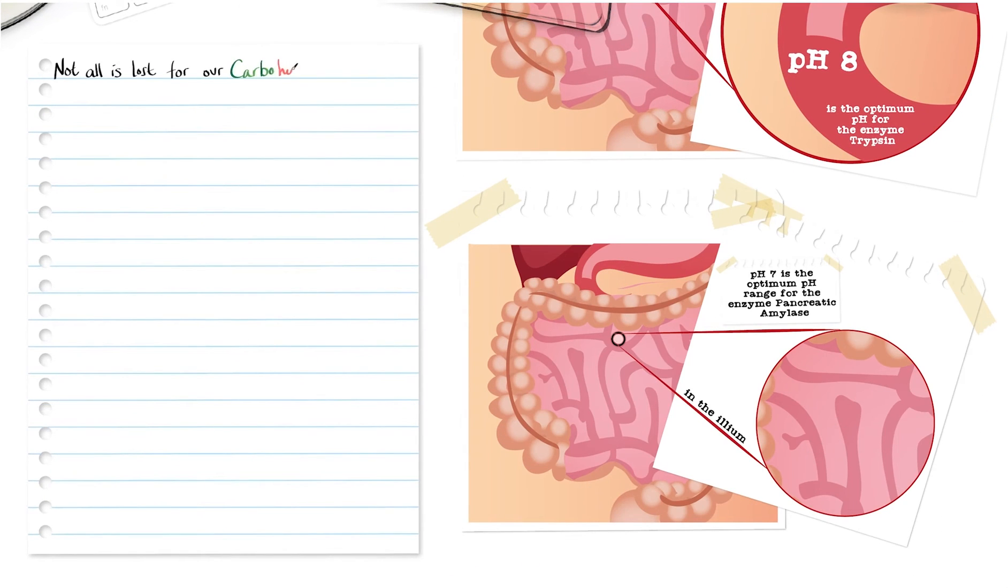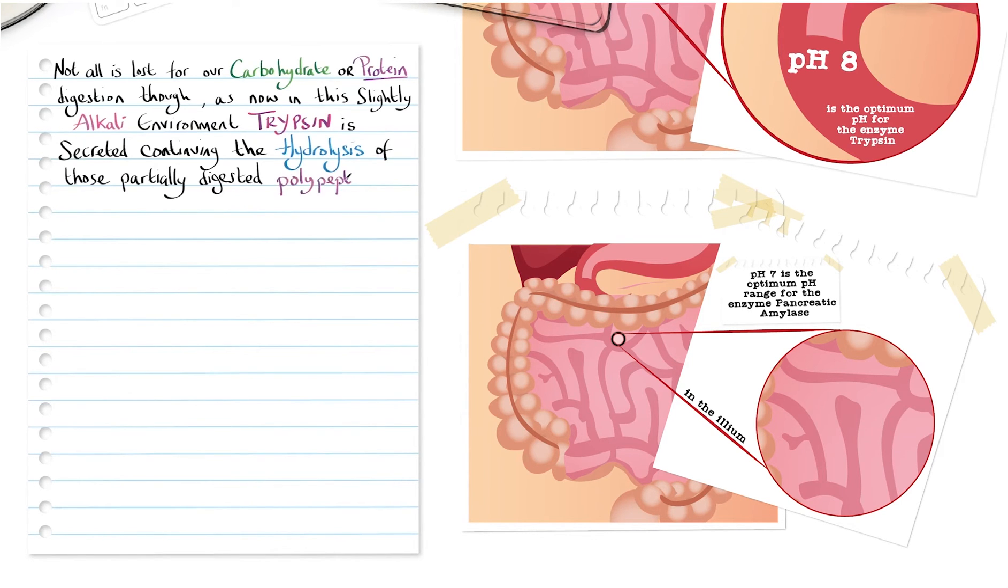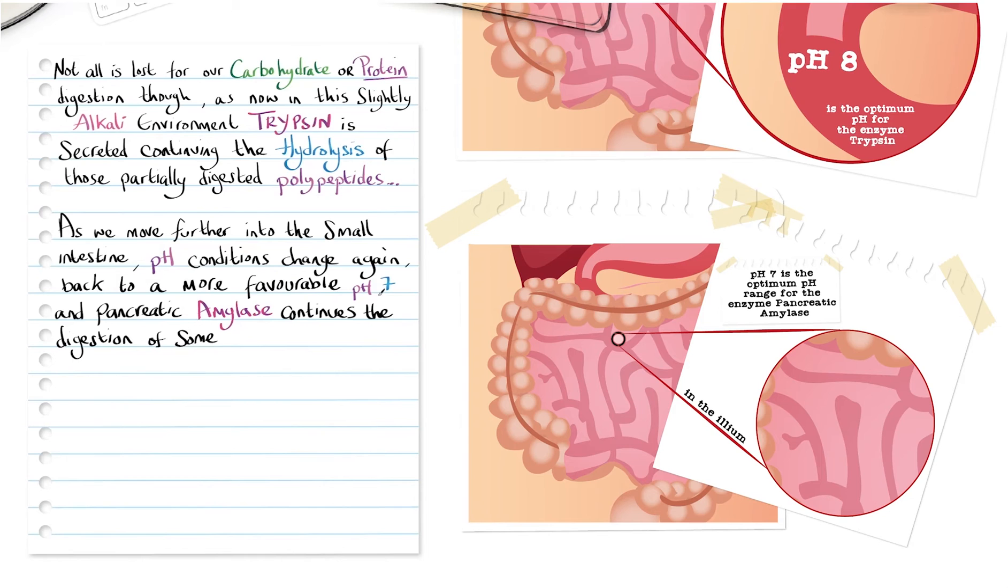Not all is lost for our carbohydrate or protein digestion though, as now in this slightly alkali environment, trypsin is secreted, continuing the hydrolysis of those partially digested polypeptides. And as we move further into the small intestine, pH conditions change again, back to a more favourable pH 7, and pancreatic amylase continues the digestion of some carbohydrates.